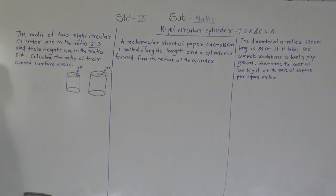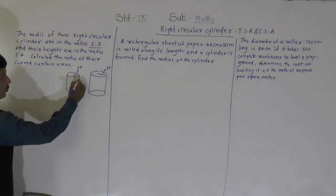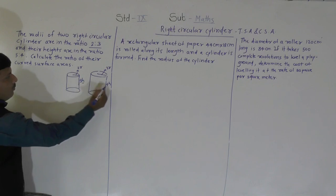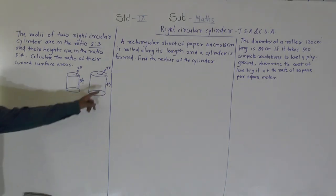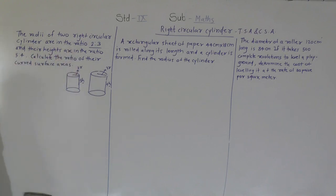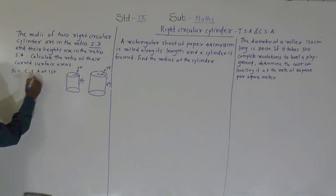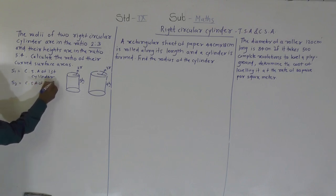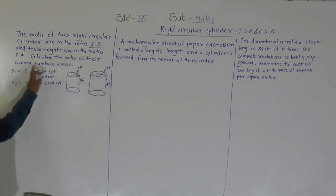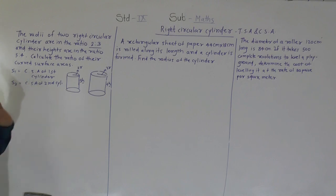The heights are in the ratio 5:4, so we take the height of the first cylinder as 5h and the second as 4h, using h as a variable. Finally, they ask us to calculate the ratio of their curved surface areas. We define S1 as the CSA of the first cylinder and S2 as the CSA of the second cylinder.